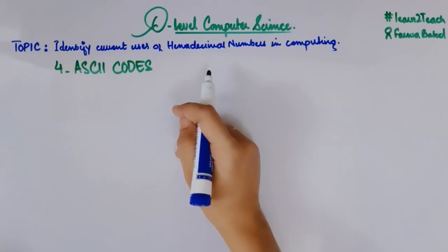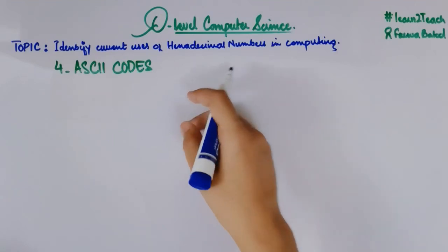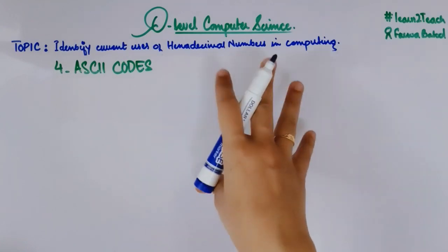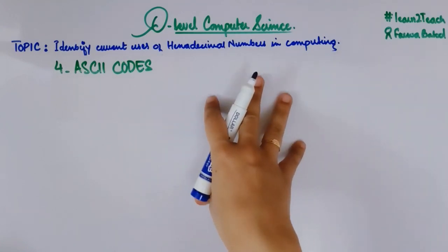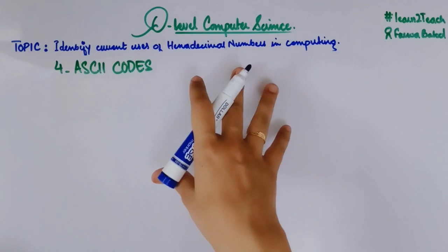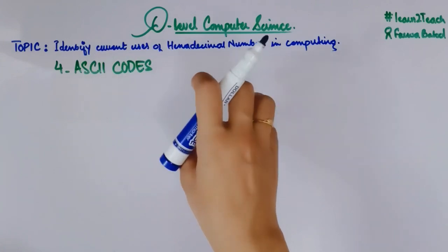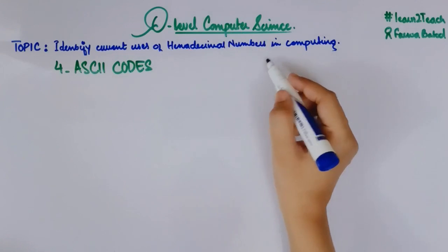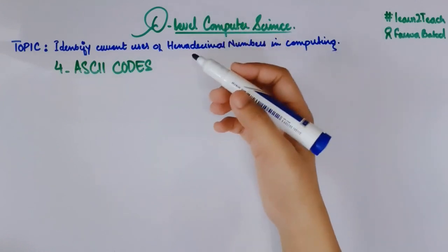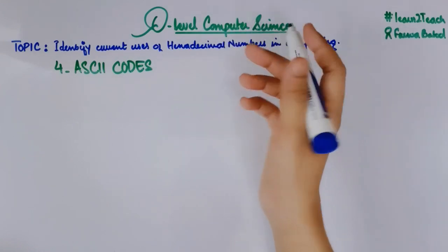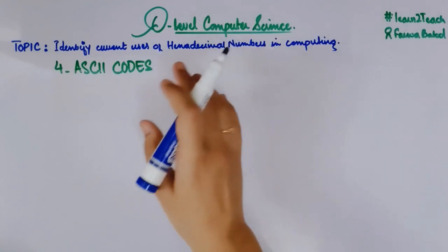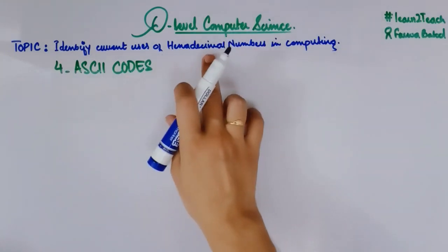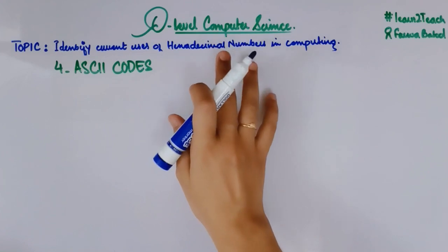Hello everyone, this is your instructor for Rabatool and welcome to the course of O level computer science. In this video we are looking at the uses of hexadecimal numbers in computing. Up till now we have covered three uses: color codes, memory dumps and MAC addresses. Now we are going to see ASCII codes and their representation in terms of hexadecimal numbers.